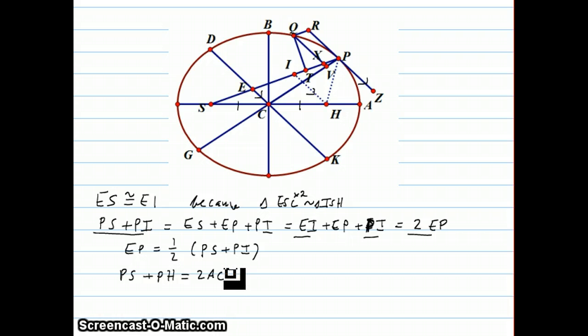Another property of the ellipse is that, and this was mentioned in the last tutorial, if we have this tangent line RZ, that angle RPS, which is also angle RPI, will always be congruent to angle ZPH. Basically, if you draw a line from P to one focus and a line from P to the other focus, the angle that those lines make with the tangent will be congruent.